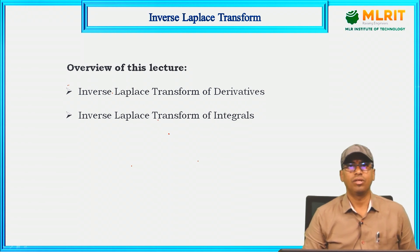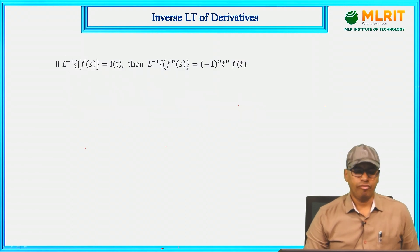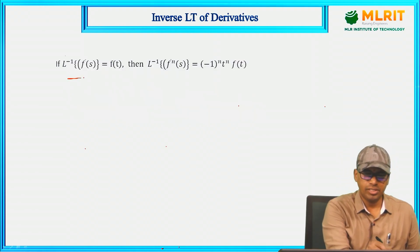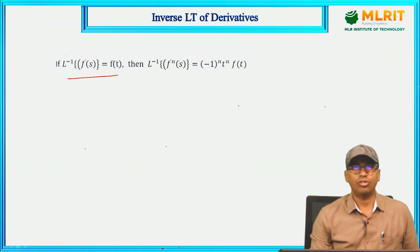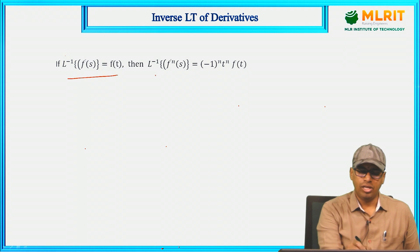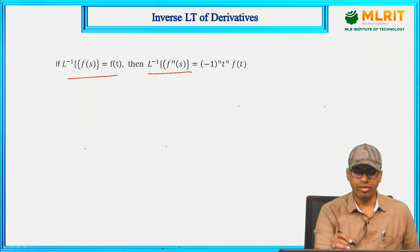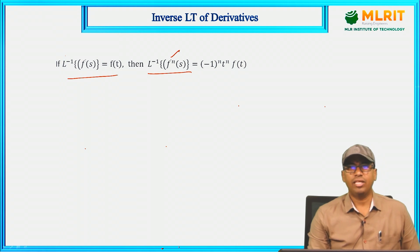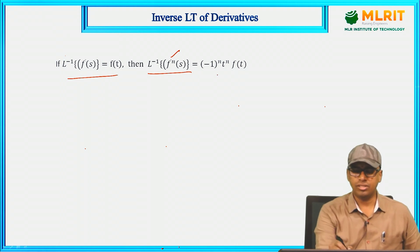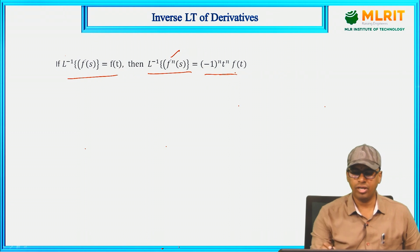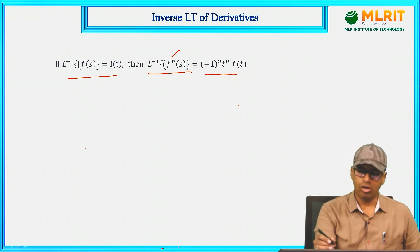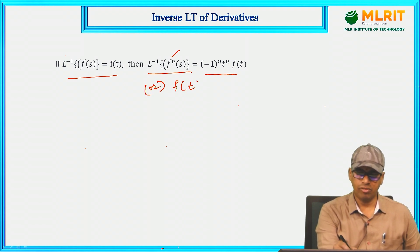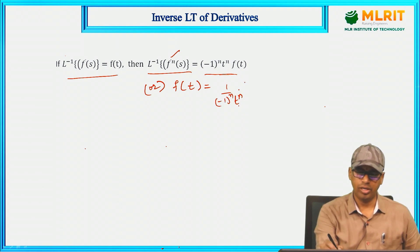Let us see what is inverse Laplace transform of derivatives. If L inverse of f̄(s) is f(t) — this is the basic definition of inverse Laplace transform — then the inverse Laplace of the nth derivative f̄⁽ⁿ⁾(s) is defined as (-1)ⁿ tⁿ f(t). We can also write f(t) = (1/((-1)ⁿ tⁿ)) · L inverse of f̄(s).